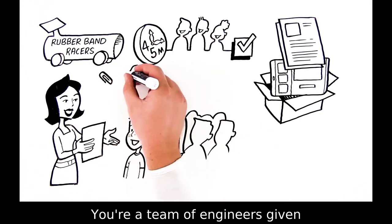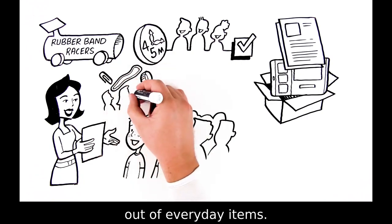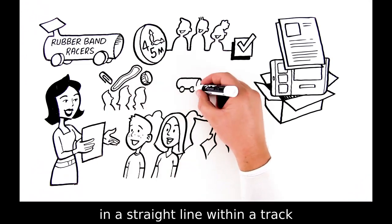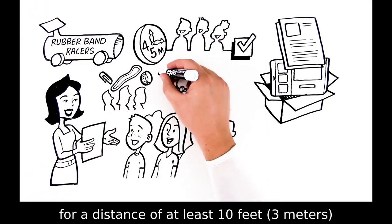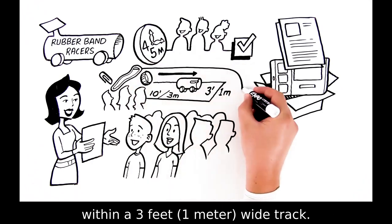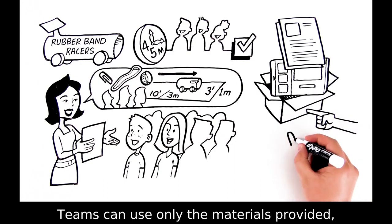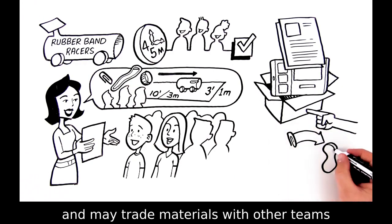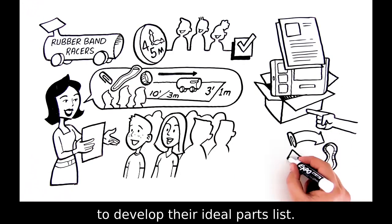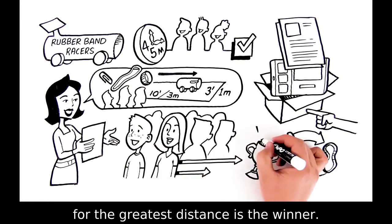You're a team of engineers given the challenge of designing a rubberband car out of everyday items. The car must be able to travel in a straight line within a track for a distance of at least 10 feet or 3 meters within a 3 feet 1 meter wide track. Teams can use only the materials provided and may trade materials with other teams to develop their ideal parts list. The car that can travel within the track for the greatest distance is the winner.